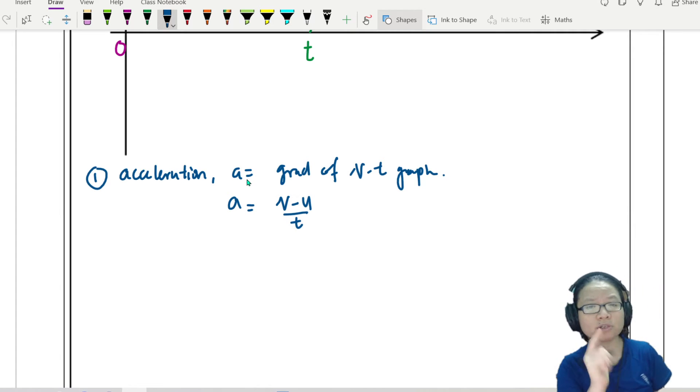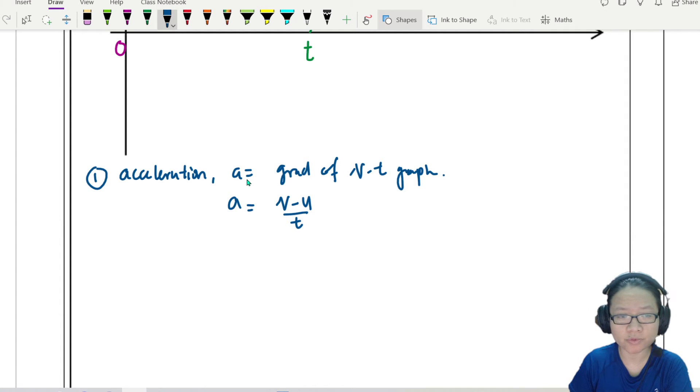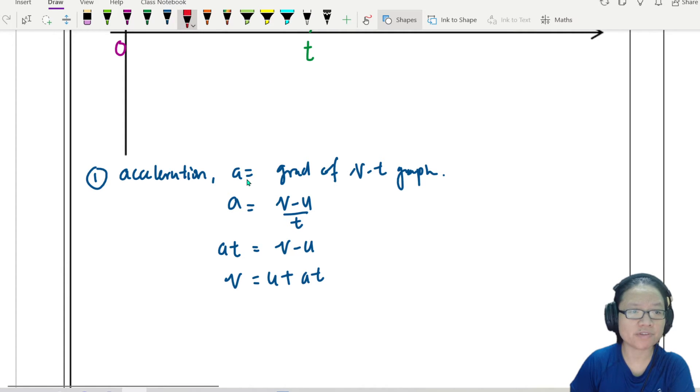Now, something you need to know about physics people is that we don't like fractions. Fractions, if we can avoid, we will. So I will rearrange. I will get at is equal to v minus u. In other words, v is equal to u plus at. So this forms my very first kinematics equation.